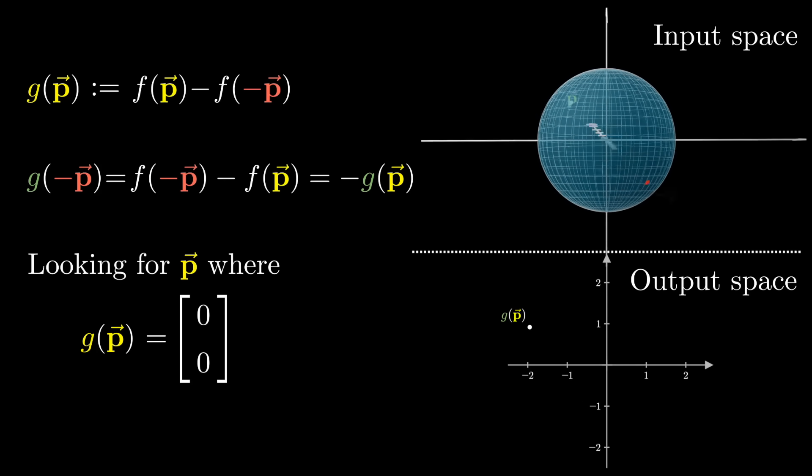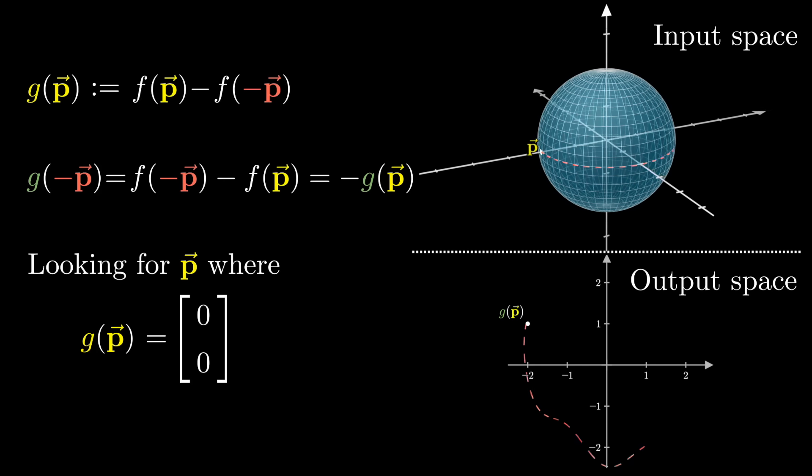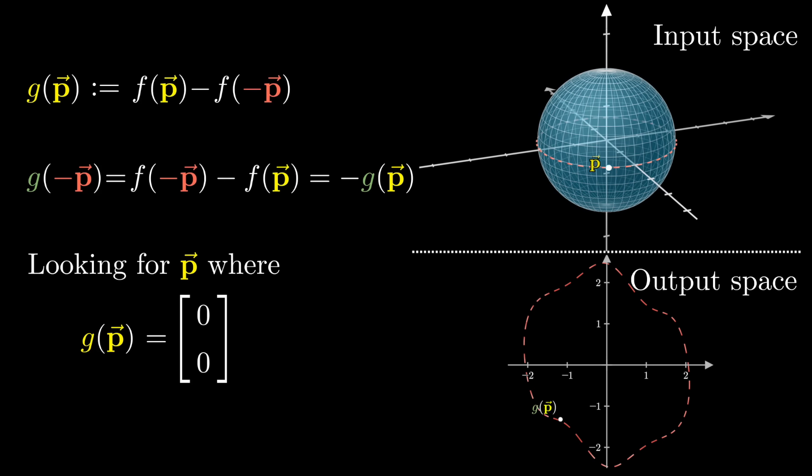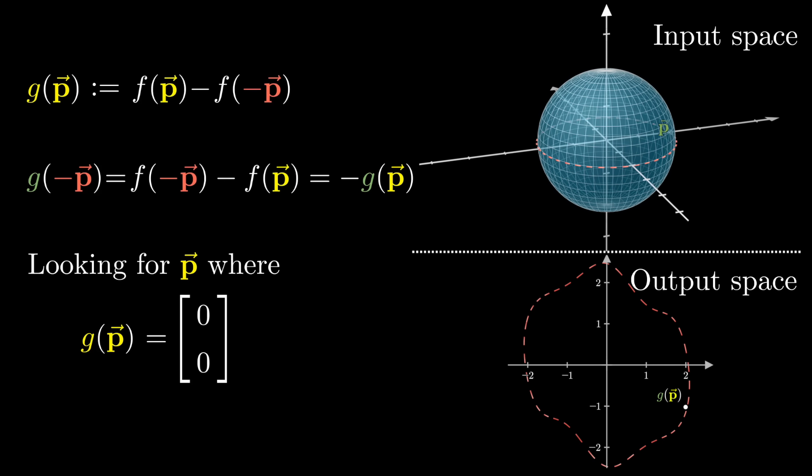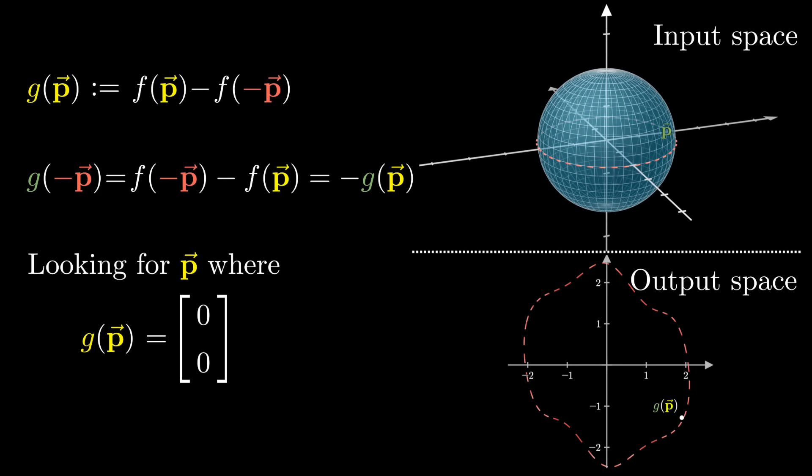Notice what this means if you were to continuously walk around the equator and look at the outputs of g. What happens when you go halfway around? Well, the output needs to have wandered to the reflection of the starting point through the origin. Then,